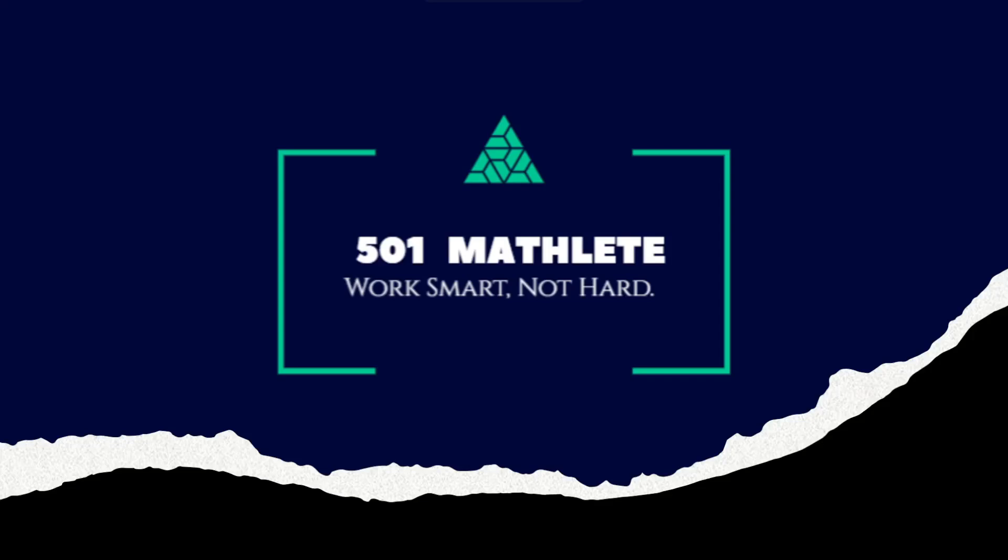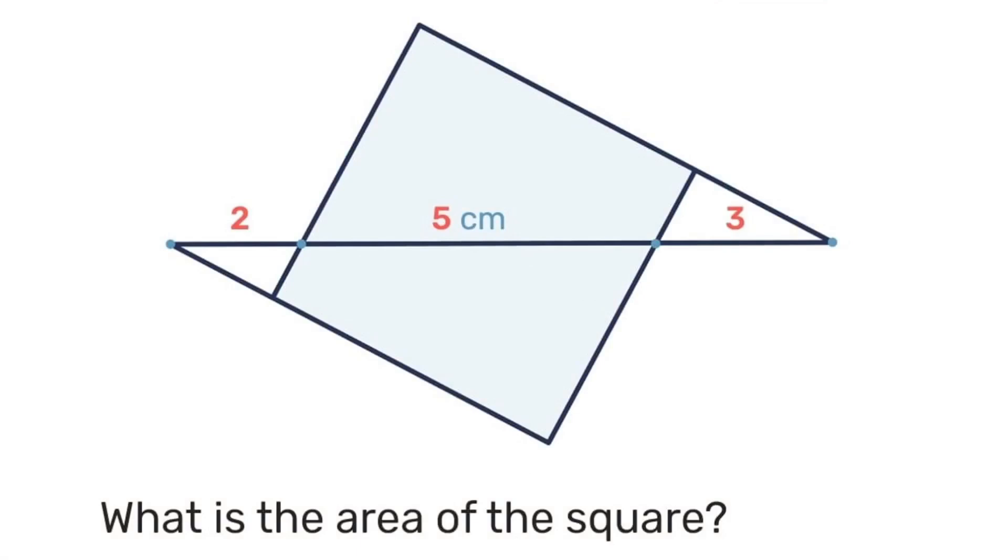Good day and welcome to 501 Maths where we work smart, not hard. In today's problem we're given this diagram of a square with a line that cuts across it, and we're given some dimensions of that line, namely 2 centimeters, 5 centimeters, and 3 centimeters. With that, we're to determine the area of the square. Pause the video here and see what you can come up with. I'm going to solve it this way.